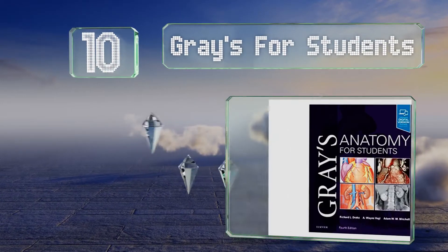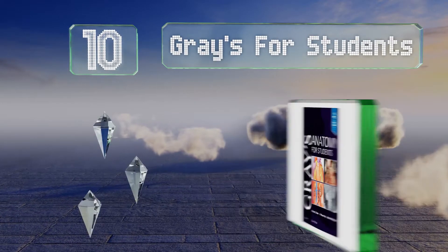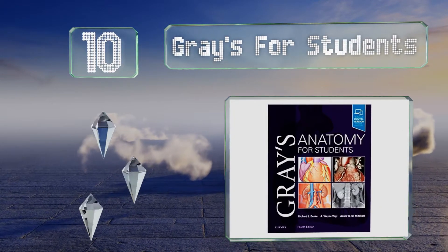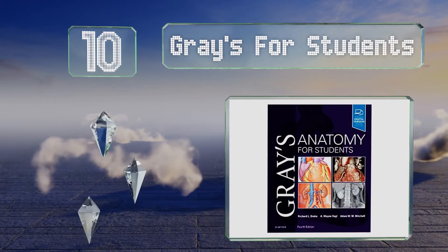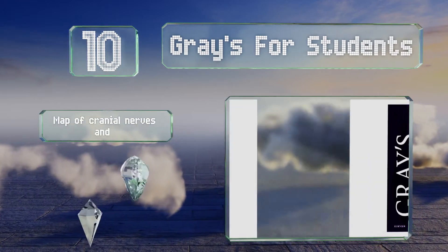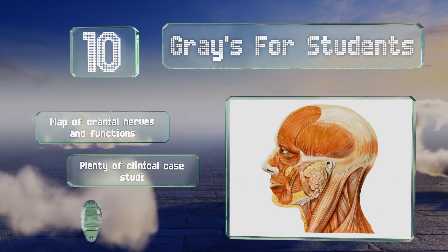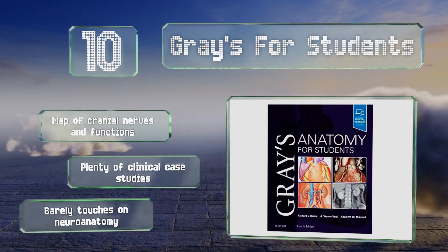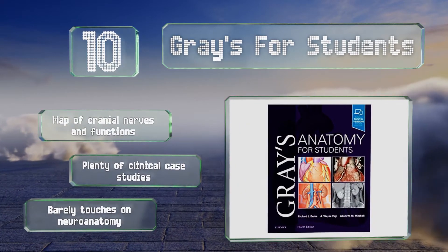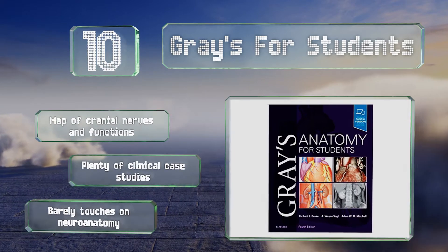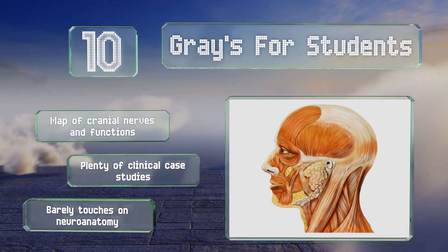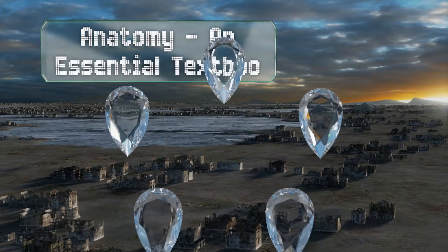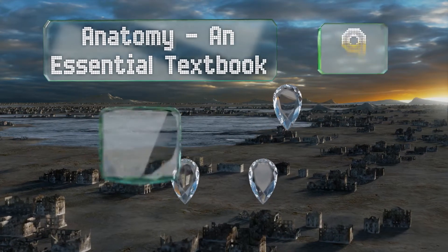Starting off our list at number 10, rather than attempt to cover everything, Gray's for Students focuses on the core information that will help you get through your courses. Formatted to make studying easier, it's packed with handy learning aids, conceptual chapter overviews, and in-depth discussions. It contains a map of cranial nerves and functions along with plenty of clinical case studies. However, it barely touches on neuroanatomy.